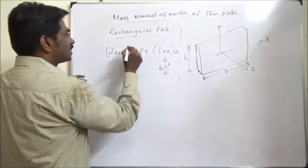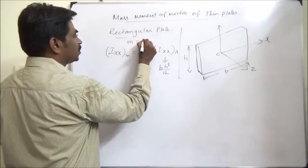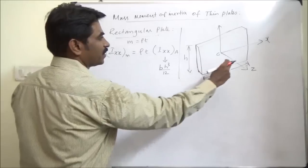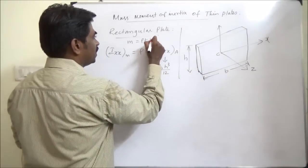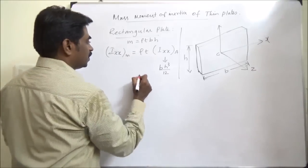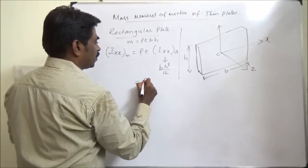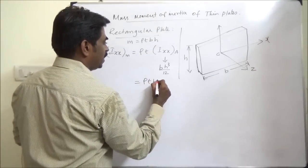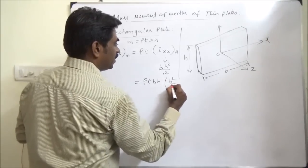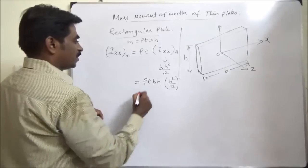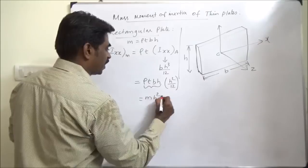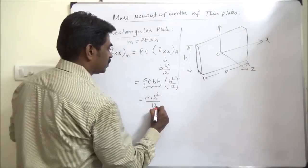The mass of the rectangular plate is rho·t·B·H. So Ixx_mass = rho·t·(B·H³/12) = rho·t·B·H·(H²/12), which gives mass times H squared by 12. Therefore, Ixx_mass = M·H²/12.